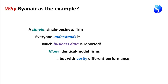Why are we choosing Ryanair as the example? First, it's a simple single-business firm without lots of different business units. Second, it's a business pretty much everyone understands — we've all flown on airlines. Third, it's a rare example where a lot of data about the business itself — not just financials but the stuff the business is made of — is actually reported. We know about their aircraft numbers, the routes they're flying, how many kilometers their aircraft fly. Lots of business data is reported.